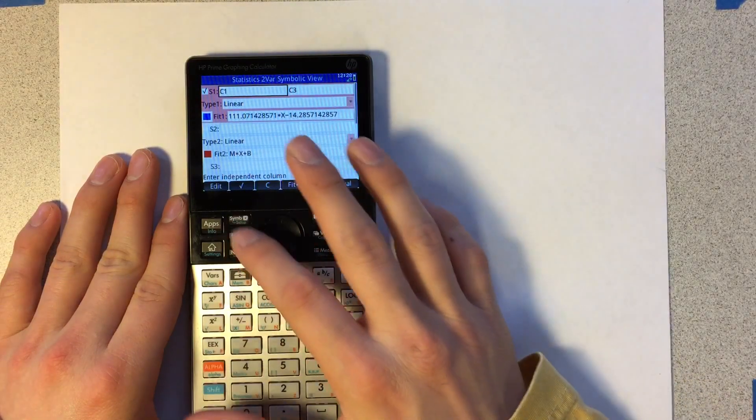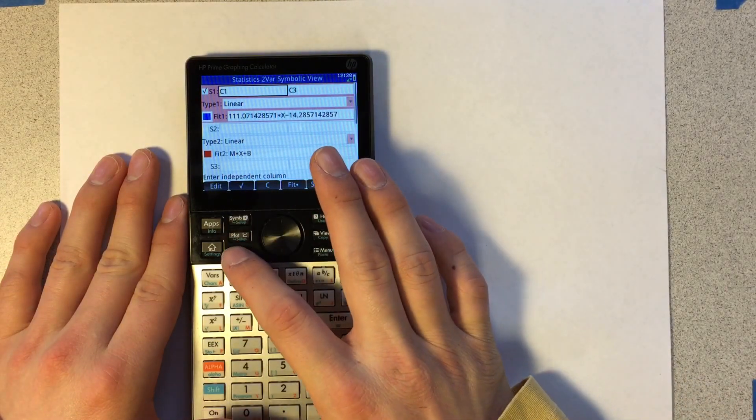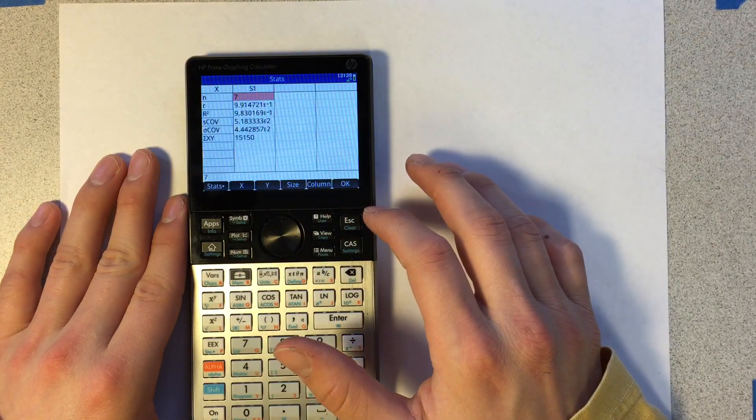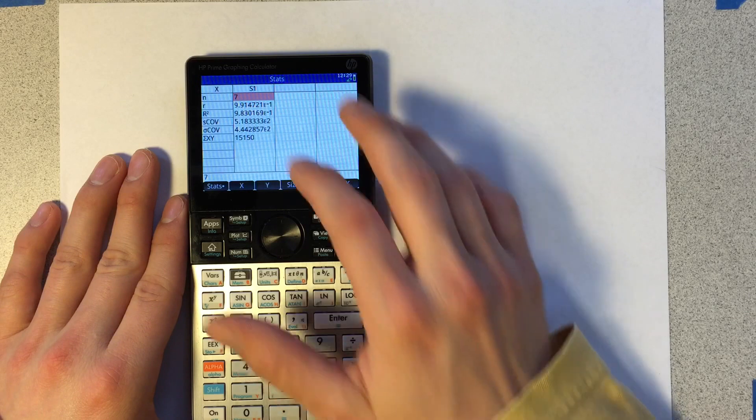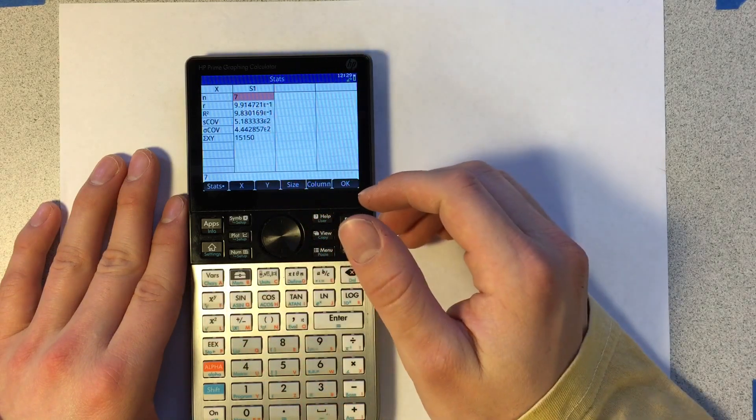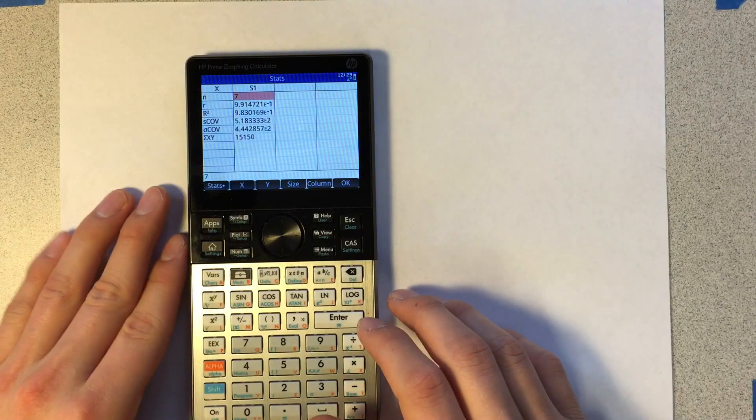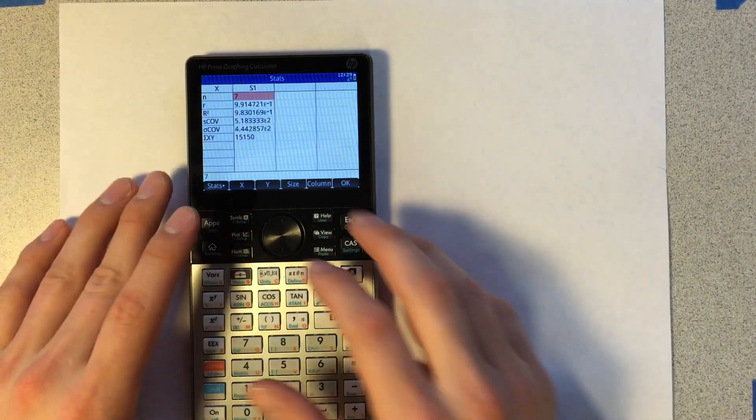In order to see an R value for that curve fit, go back to the number right there and say statistics. This shows you the R squared value as well as a few other things that if you've taken statistics, you may understand what these are.